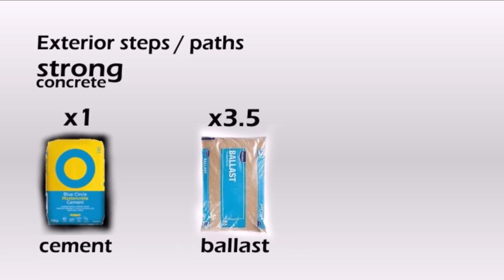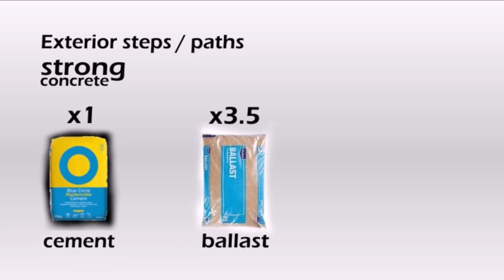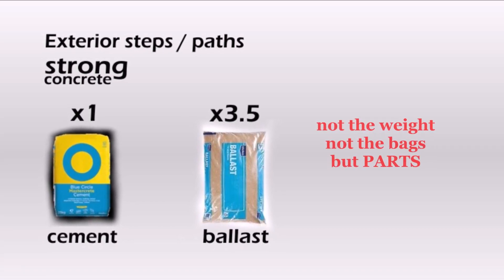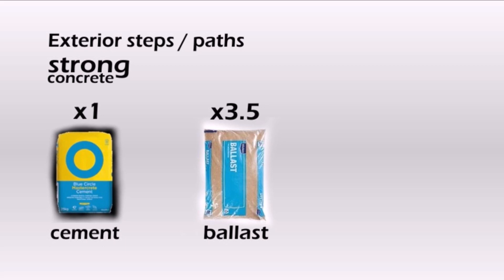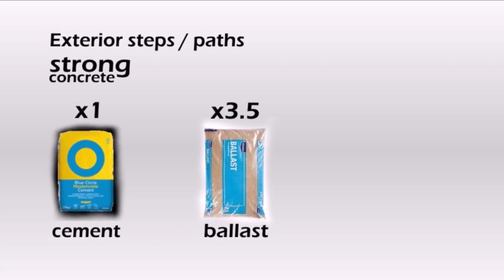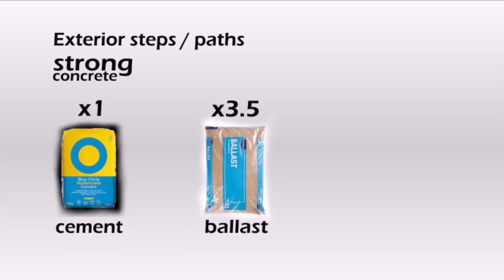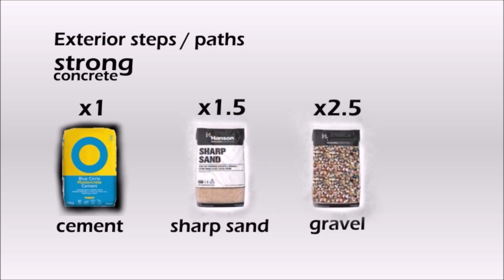A bag of cement can weigh 20 kilos, and a bag of ballast can weigh 25 kilos, 20 kilos, or even 30 kilos. To mix the correct parts of cement and aggregates, don't rely on the bags or the weight of the bags. Good practice is to take a big empty bucket, put the same amount, the same level of cement and aggregates separately, and put it into the concrete mixer. Exterior steps or paths need one part cement and three and a half parts ballast. This is a strong concrete. Alternatively, use one part cement, one and a half parts sharp sand, and two and a half parts gravel.